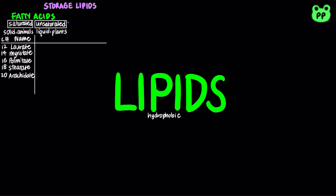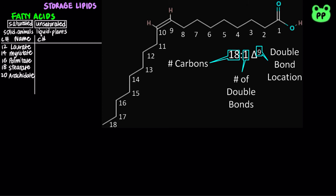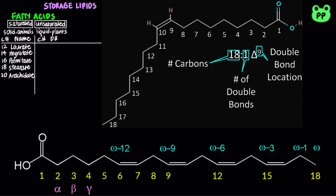Double bonds in unsaturated fatty acids usually occur three carbons apart. Unsaturated fatty acids are denoted with carbon number, followed by a colon sign, and the number of double bonds. There are two conventions for naming double bonds: the standard nomenclature assigns number one to the carboxyl carbon, with double bond positions indicated by the delta sign followed by a superscript number. An alternative nomenclature assigns number one to the methyl carbon at the other end, also known as the omega carbon.